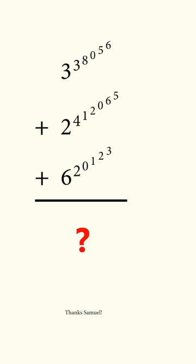Here's an excellent question. We have the sum of three numbers, where each number is a nested exponent. The first number, read from left to right, is 3^3^8^0^56. The second number is 2^4^1^2^0^65, and the third number is 6^2^0^1^23.